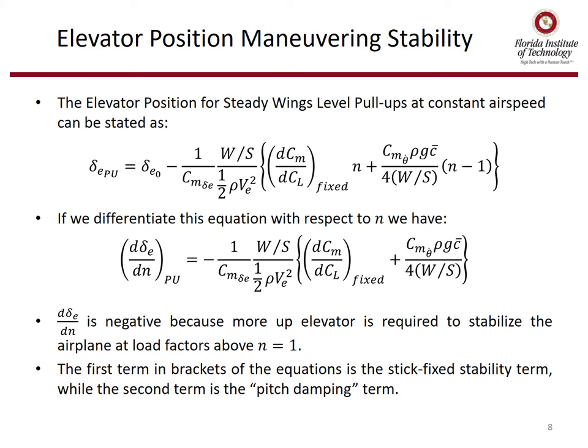If we differentiate this equation with respect to load factor n, we get the change in elevator position as a function of change in load factor for a pull-up. Inside the brackets is our dcmdcl stick-fixed — our longitudinal static stability stick-fixed margin — and the damping term. d(delta_e)/dn is negative because more up elevator is required to stabilize the aircraft at load factors above n equals 1. The first term in the brackets is the stick-fixed stability term, and the second is the pitch damping term.